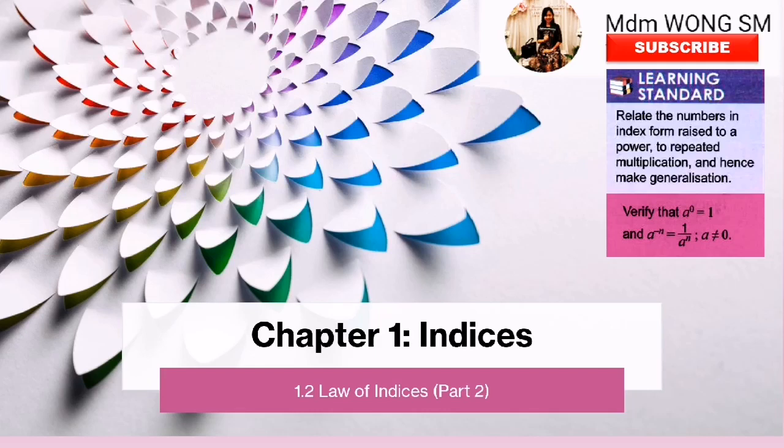In this video, you are going to learn two things. First, relate the numbers in index form raised to a power to repeated multiplication and hence make a generalization. Second, verify that a power of 0 equals 1, and a power of negative n equals 1 over a power of n, where a is not equal to 0.